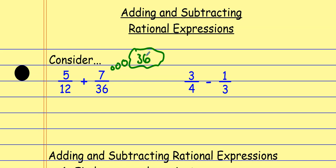It's got to be a number that they can both multiply to become. So I could multiply this first fraction by 3 over 3, and that would give me 15 over 36. The second fraction can stay exactly the way it is because it already has a denominator of 36. Now I have common denominators, but after I have common denominators, remember, to add these together I only add the numerators — the denominator stays the same. So here I add the numerators; that's 22.